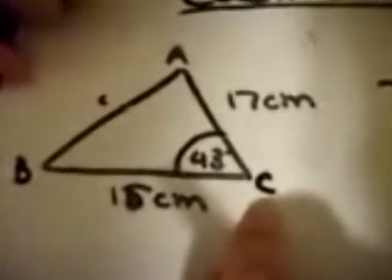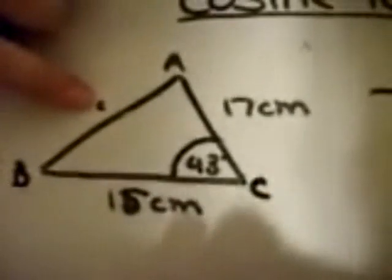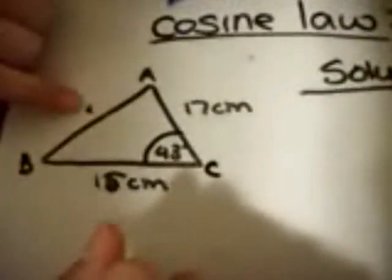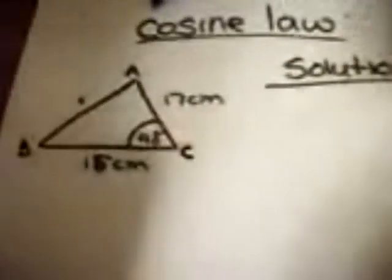Angle C, which is 43 degrees, has an unknown side. So in order to find the side, we must use the cosine law. So first, we must state the cosine law.